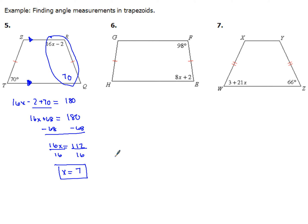Now x has a value of 7, but the 16x minus 2, here's another way that you could have done this problem. You could have recognized that, hey, this angle right here, if this angle q is 70, then 16x minus 2, since they're going to be supplementary, that's got to be 110. So you could have set it up like this.